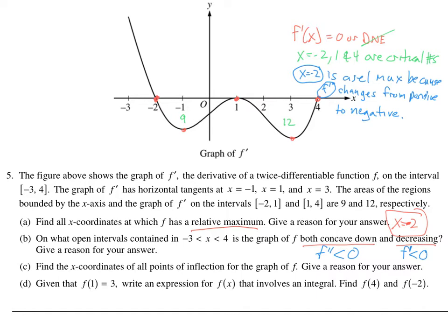Where are our slopes negative and our graph values negative? Remember, this is the f prime graph. So we're looking for where the graph is negative and where the slopes are negative. On this first interval, the slopes are negative, but the values aren't. On the next interval, the slopes are negative and the values are negative — good. Then the slopes are positive, so skip that. Here, the slopes are negative and the values are negative — another spot. And here, the values are negative but the slopes aren't. So do you see your two intervals?